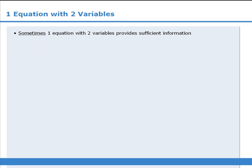Okay, the takeaway from all of this is that when it comes to data sufficiency questions, there are situations in which one equation with two variables does provide enough information to answer the target question.